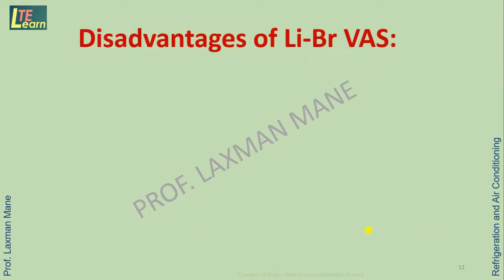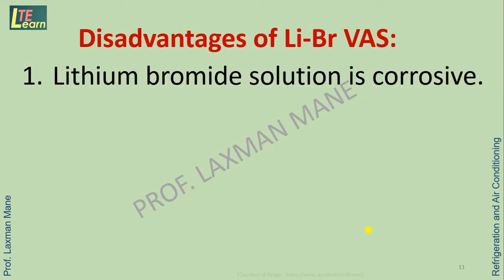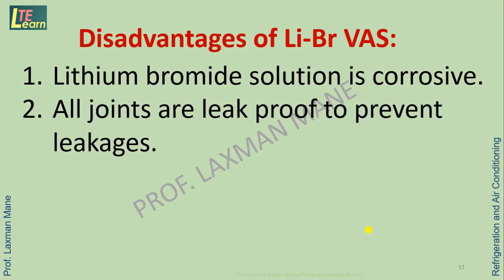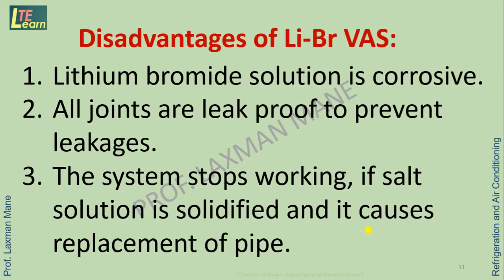There are some disadvantages. Lithium bromide solution is corrosive in nature. All joints are leak proof to prevent leakages. So it is very difficult to dismantle the system. The system stops working if salt solution is solidified and it causes replacement of pipe.